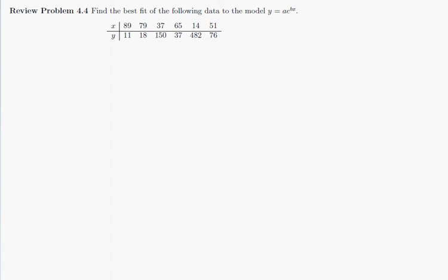For this one, we will turn this into something that is linear by using logarithms. So we take the natural log of both sides. Natural log of y is equal to the natural log of a plus the natural log of e to the bx, and natural log and exponential cancel themselves out. So we get natural log of y is equal to natural log of a plus b times x.